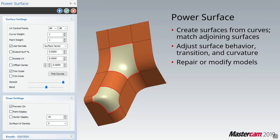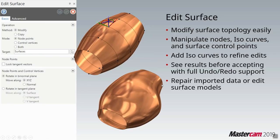Have you ever seen IGES files come in that are missing faces, or where some of the faces aren't quite the way you want them? With 2019 we have the ability to do something called the power surface. Power surface is a creation tool that adds intelligence to surface creation. And if that surface isn't quite what you want on those imported models, starting in 2019 you can actually edit the surfaces — whether imported or ones you created.